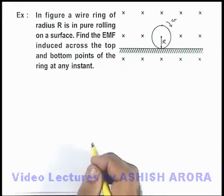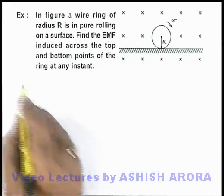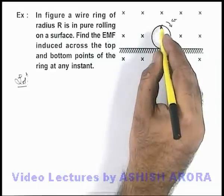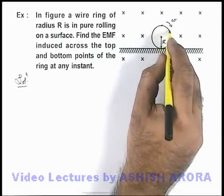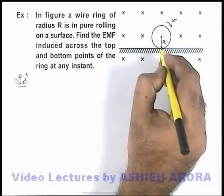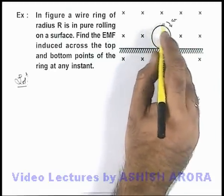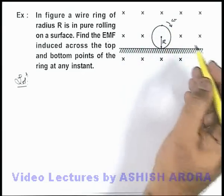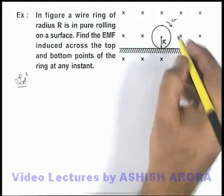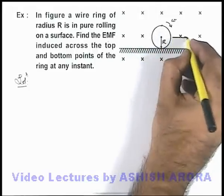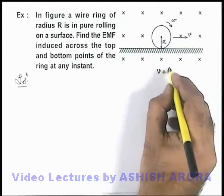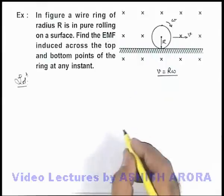Now in this situation, if we just have a look carefully, we can directly state that a semi-circular loop on the left side and a semi-circular on the right hand side, at any instant are rotating with an angular speed omega. We can say at any instant the centre of mass is moving with a speed v, and the speed of centre of mass we can write as r omega.